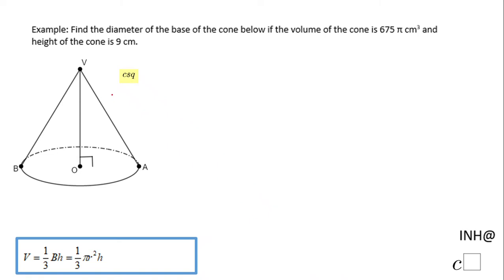Welcome or welcome back, I need help at C square. In this example we have a cone. The volume is given, it's 675π cubic centimeters. We know also the height. The question is, can you find the diameter?